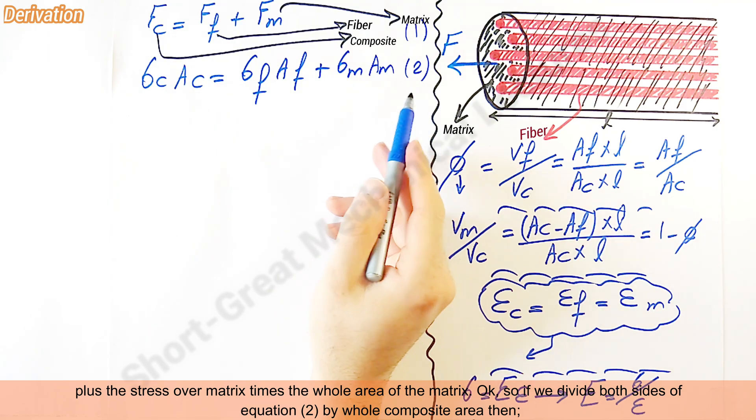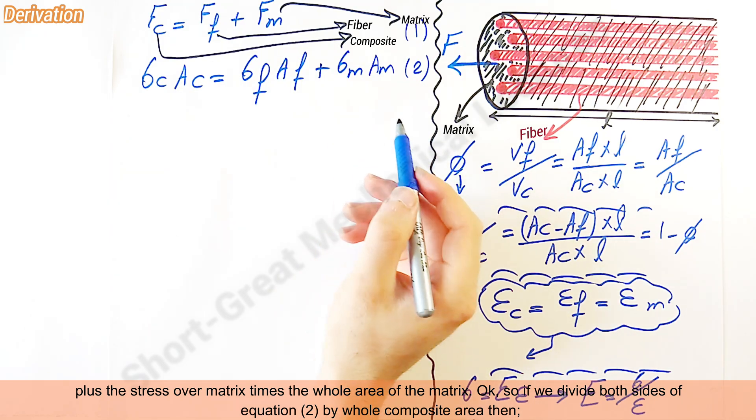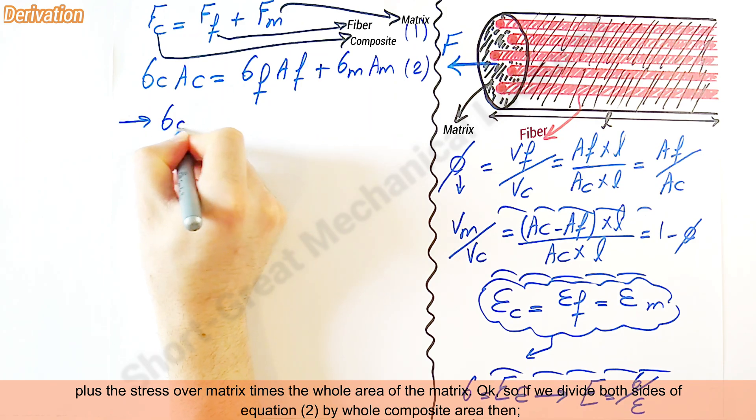If we divide both sides of equation 2 by whole composite area, then...